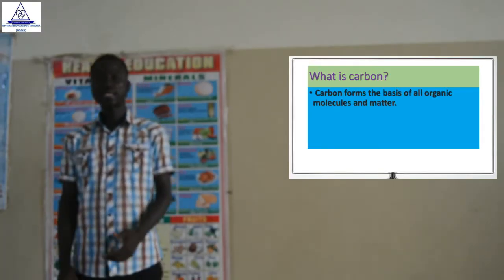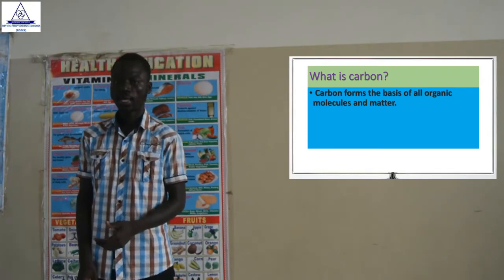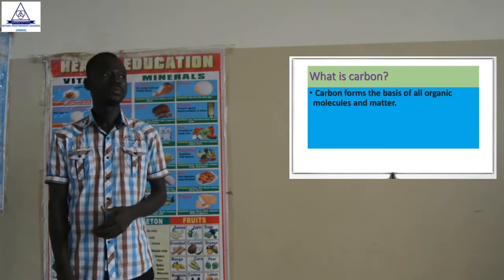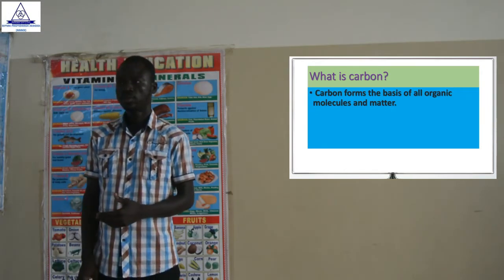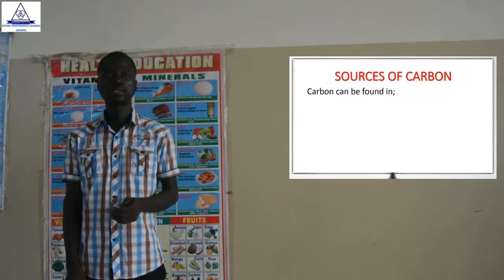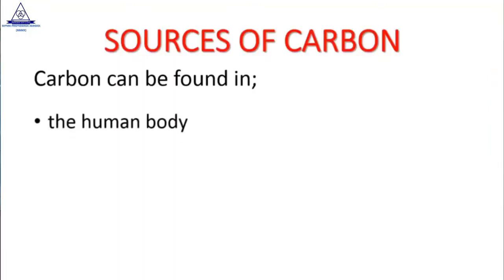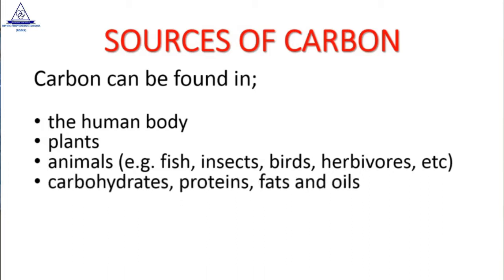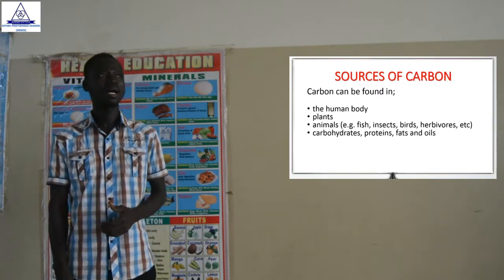Since the Earth is dynamic, carbon does not stay at a particular place — it moves. Carbon can be found in the human body, in plants, and in animals such as fish, insects, birds, and herbivores. Carbon can also be found in carbohydrates, proteins, and fats and oils, which are essential.